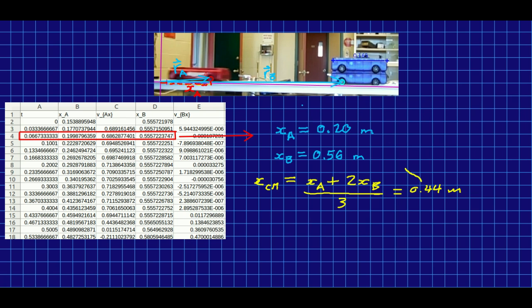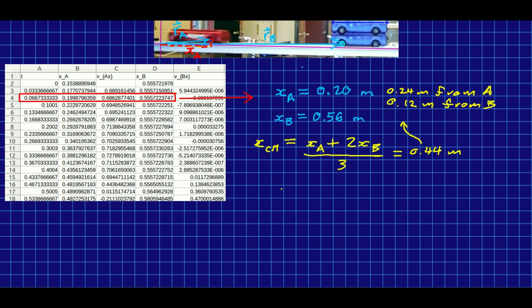And for once, I kind of care about this number, because there's something interesting about it. Look, it's 0.24 meters from cart A, and it's 0.12 meters from B. So it's twice as far from A, and A has half the inertia. That's interesting. That's a clue as to what's going on here. Really, we've just done a weighted average of these positions, where our weighting factor is the inertias.